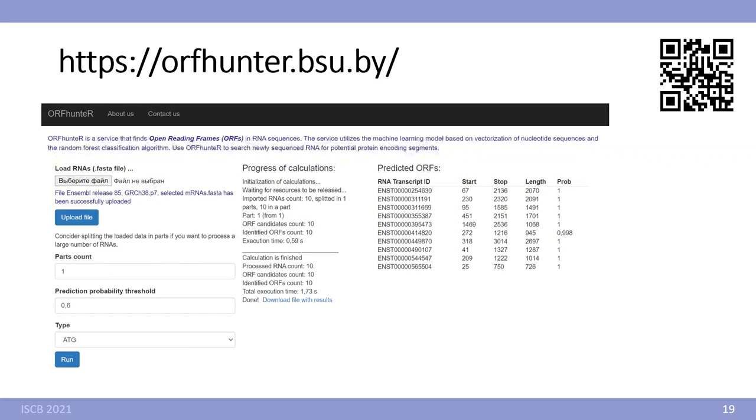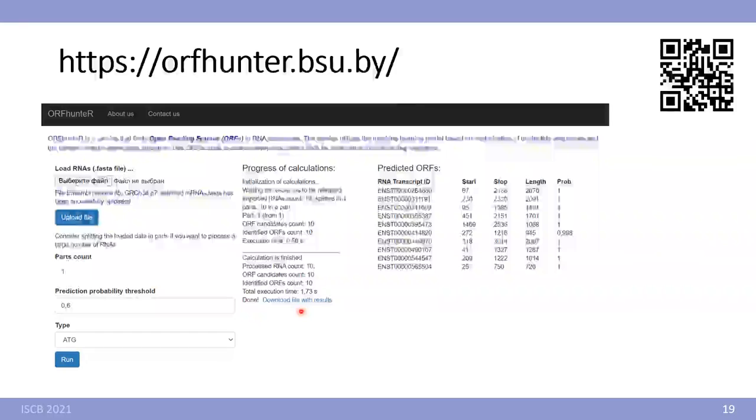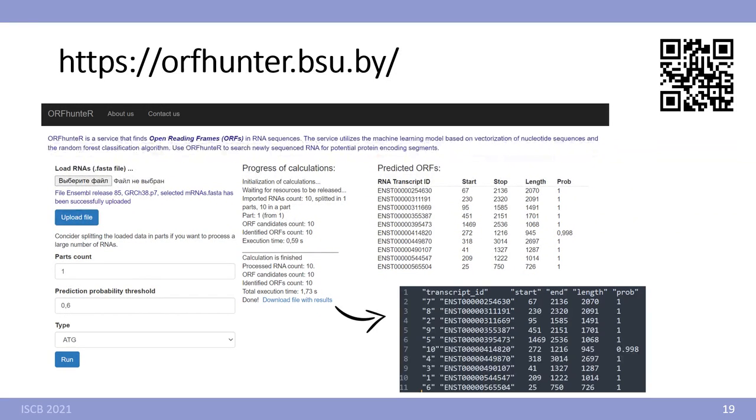In addition we created a web application for ORFHunter. Here you can upload your FASTA file with transcripts, choose prediction probability threshold, and as a result you will get the list of your predicted open reading frames. And you can download this list in a text file.